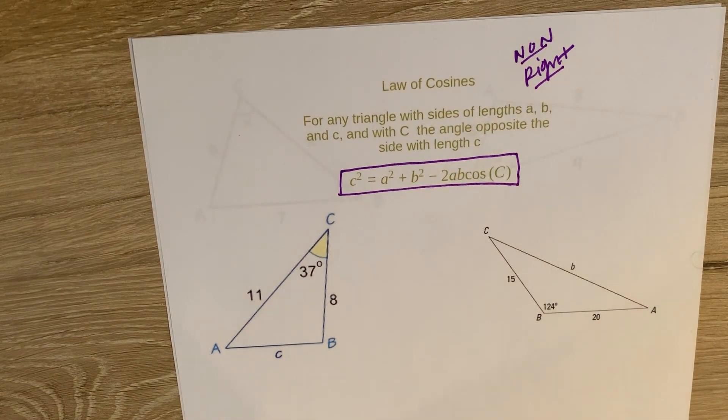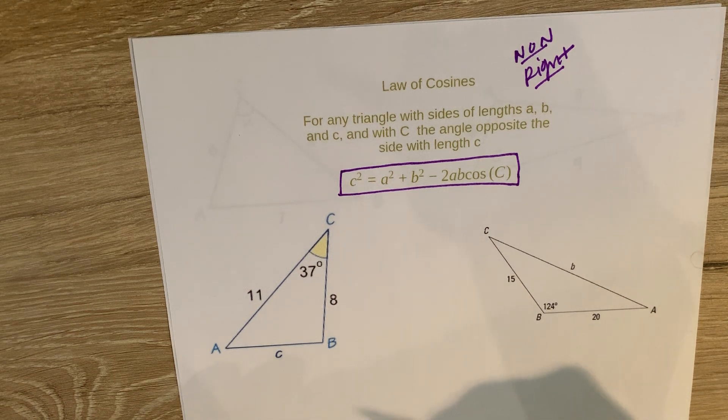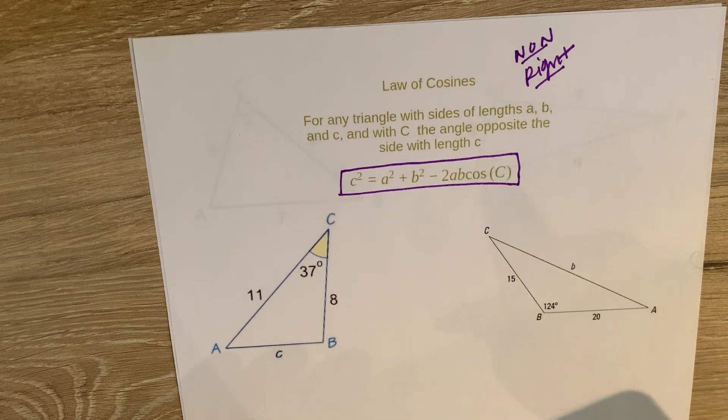And just like the law of sines, the law of cosines is to help us find angles and sides. So it helps us to find the angles and the sides in non-right triangles, where SOH CAH TOA, we can find the angles and the sides of right triangles.